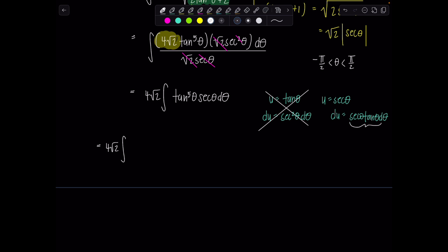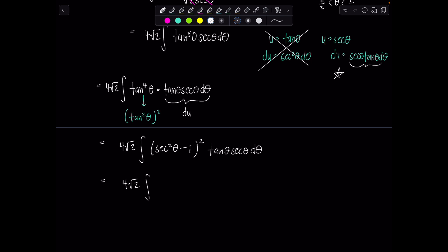Since I want to make this substitution happen, I'm going to steal a tangent theta from tangent to the fifth theta. So we've got tangent to the fourth theta times tangent theta secant theta d theta. So all of this is going to become my du, but look back. That means u needs to be secant theta. So the rest of my integral needs to involve only secant thetas. Right now I've got tangent to the fourth theta. That's tangent squared theta squared. And I can replace tangent squared theta with secant squared theta minus one. So I have all of that squared times another tan theta secant theta d theta. Now we can go ahead, make the u sub, four square root of two times the integral of u squared minus one squared du.